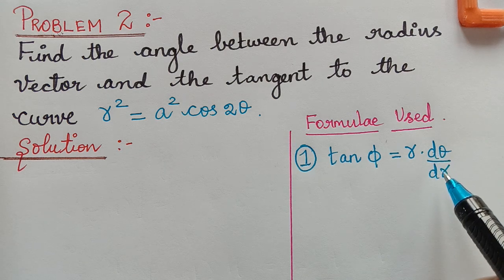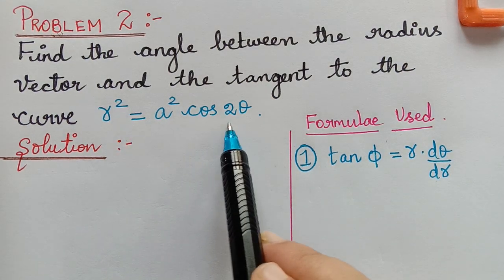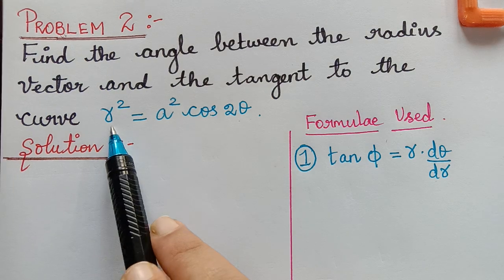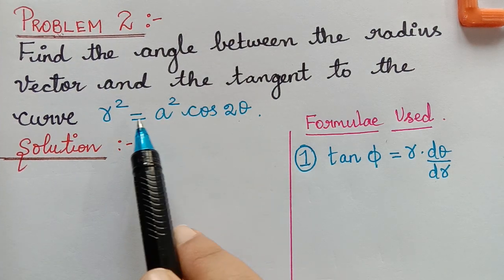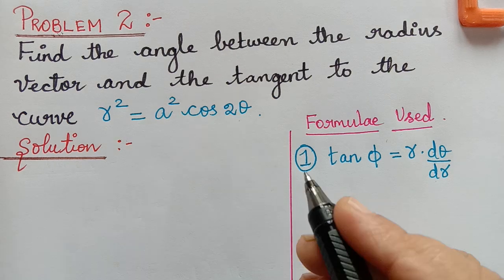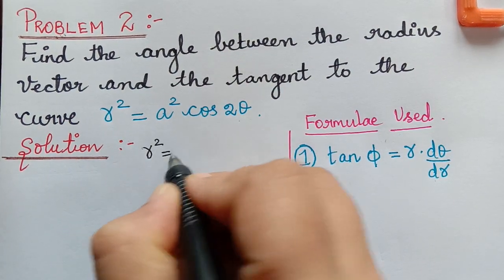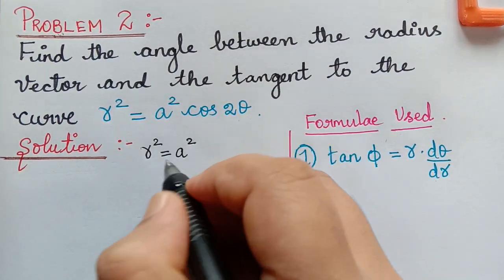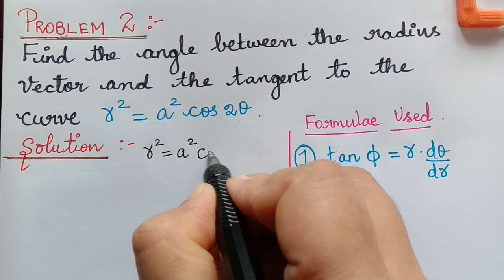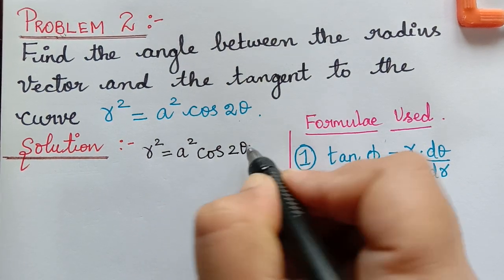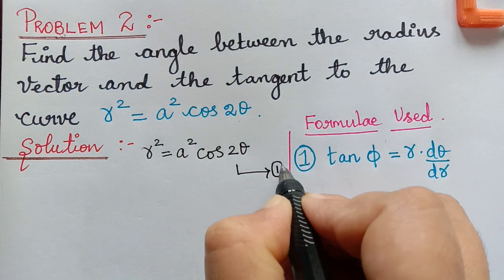In order to find dθ/dr, we have to differentiate the given curve with respect to θ. Let us mark the given curve as equation 1: r² = a²cos2θ.